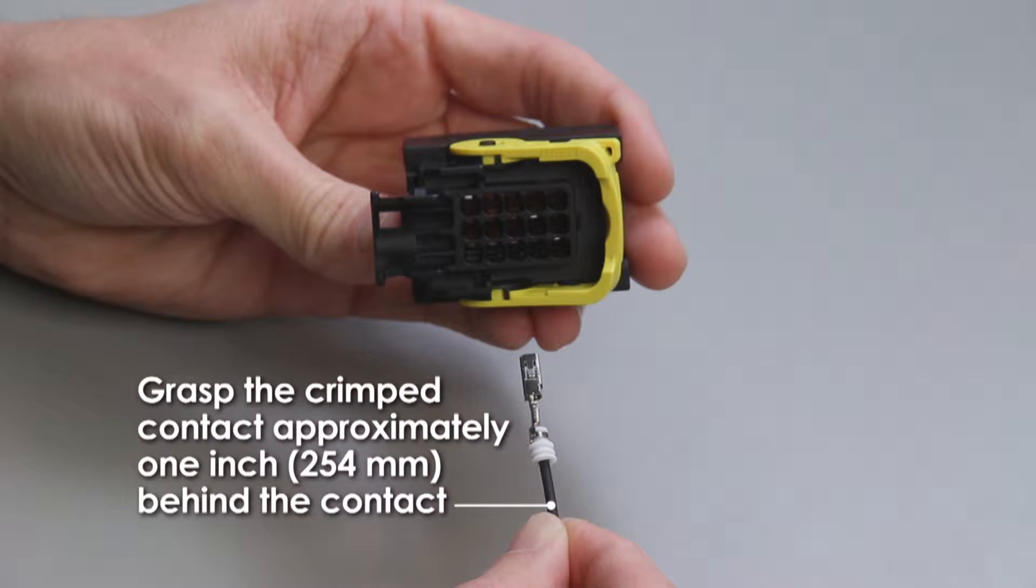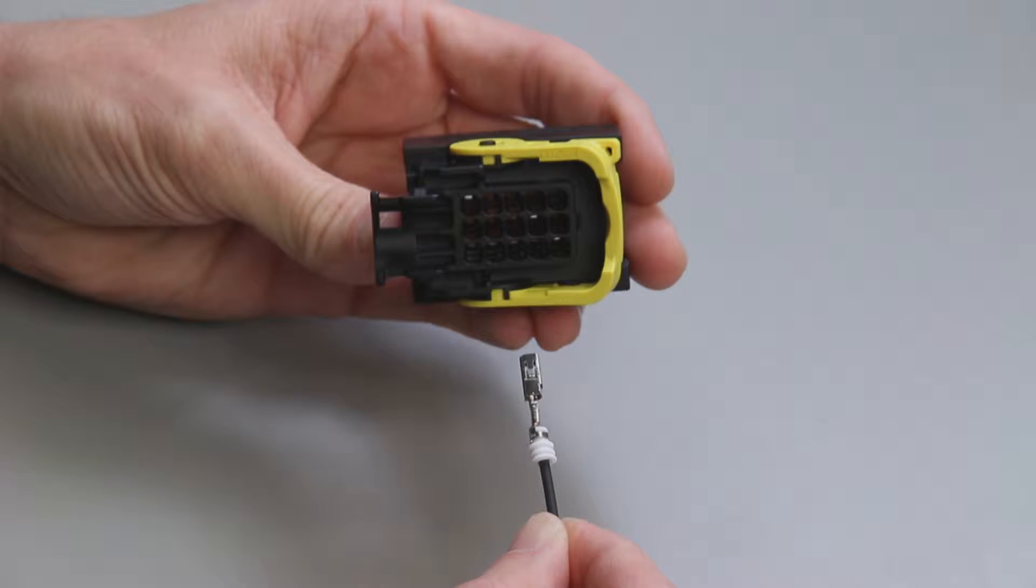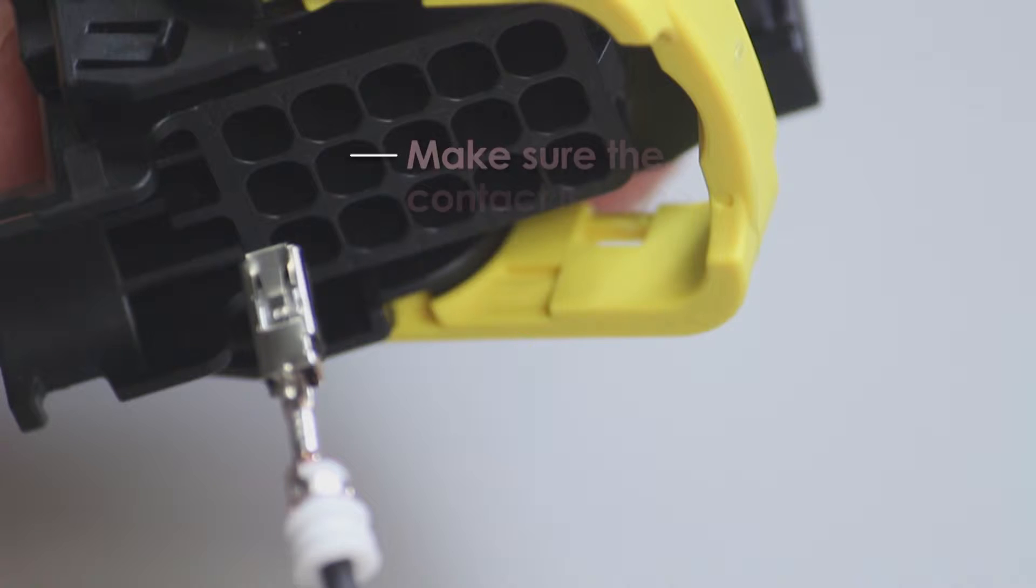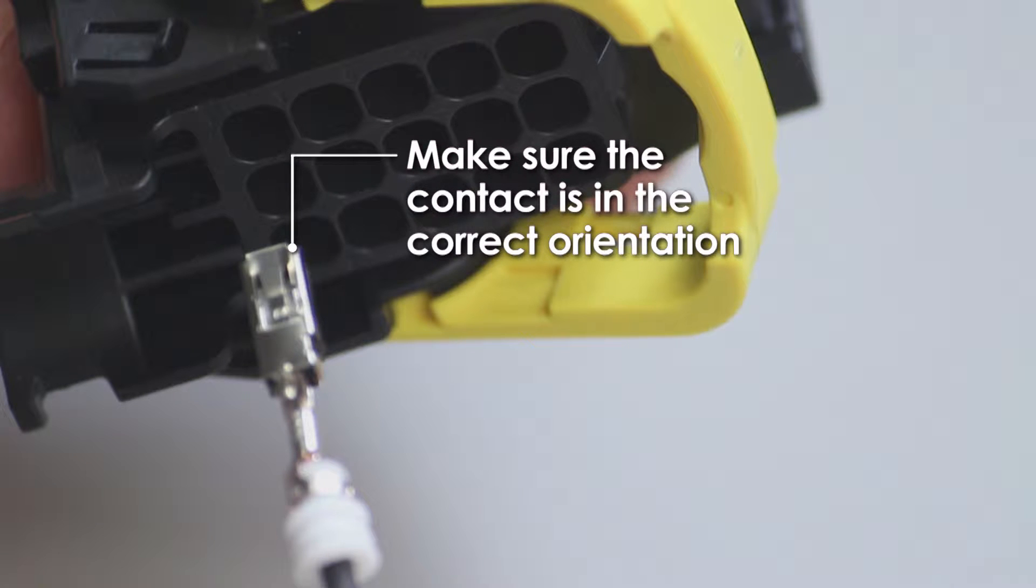Grasp the crimped contact approximately one inch behind the contact. Hold the connector with the rear facing you. Make sure the contact is in the correct orientation.